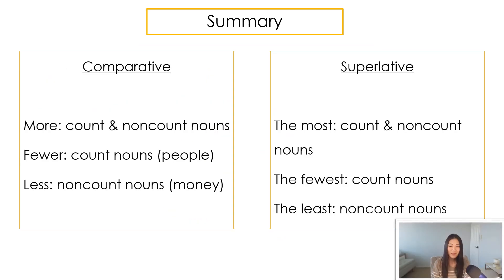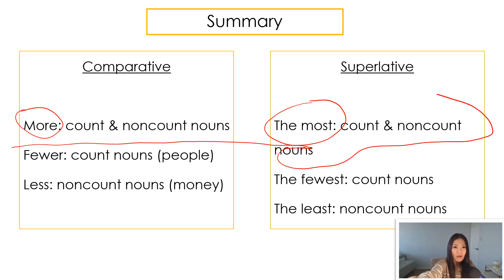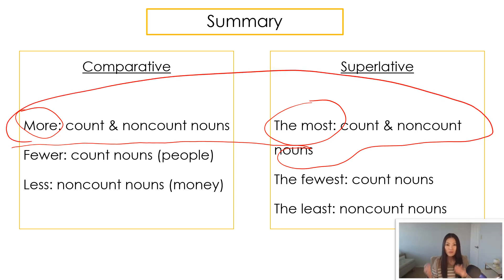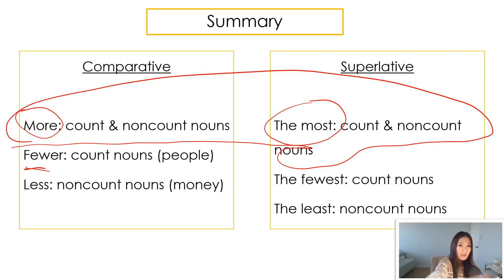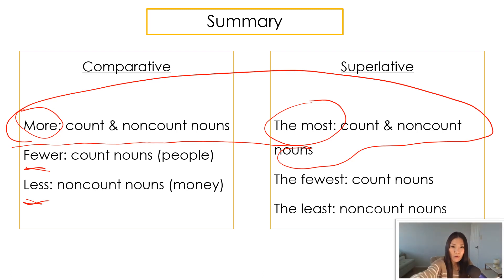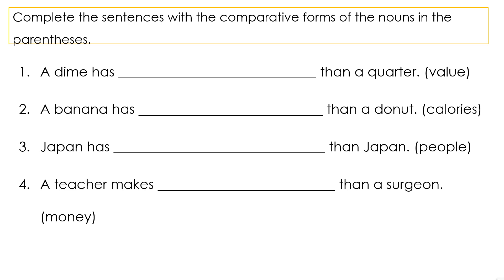This slide is just a brief summary of what we just went over. For both comparative and superlative, you use 'more' or 'the most' for both count and non-count nouns — pretty easy. But you have to think about whether your noun is count or non-count when talking about lesser amounts or the lowest degree. Use 'fewer' for count nouns like 'people,' 'less' for non-count nouns like 'money,' 'the fewest' for count nouns, and 'the least' for non-count nouns.